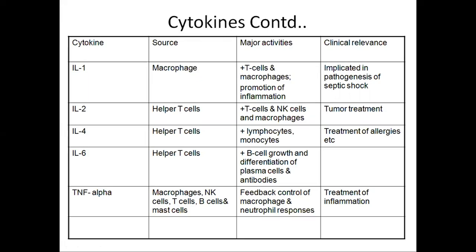Interleukin-1 is secreted by macrophages. Its important functions are activating T cells and macrophages and promoting inflammation. It is implicated in the pathogenesis of septic shock. Interleukin-2 is secreted by helper T cells. It activates T cells, natural killer cells, and macrophages, and is used for the treatment of tumors. Interleukin-4 is also secreted by helper T cells and activates lymphocytes and monocytes. It can be used in the treatment of allergies.